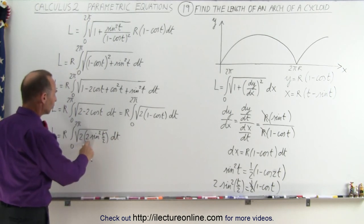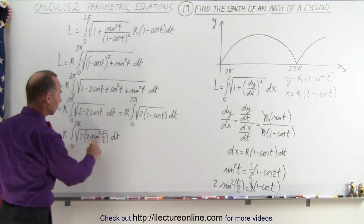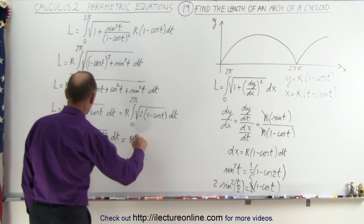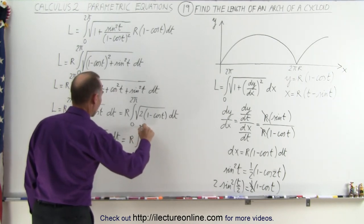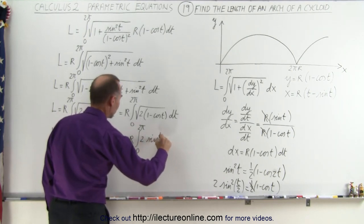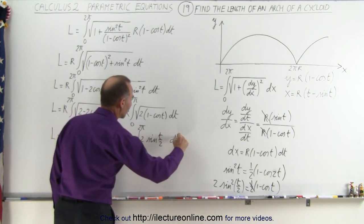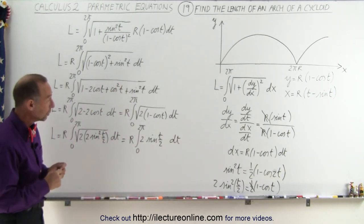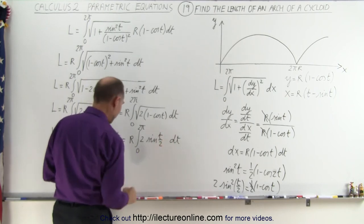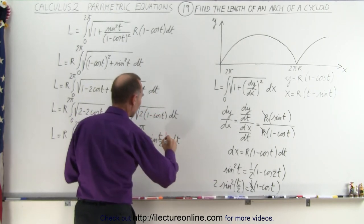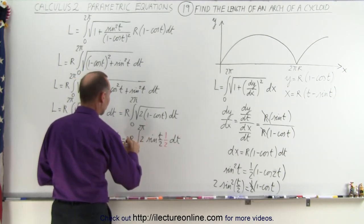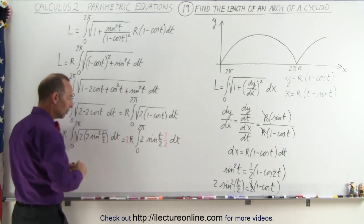This simplifies to r times the integral from 0 to 2π of 2sin(t/2) dt. Since we have sin(t/2), we need to account for the chain rule: multiply by ½ and compensate by placing a factor of 2 in front, giving us 4r times the integral of sin(t/2) with the correct ½ dt factor, and we're ready to integrate.